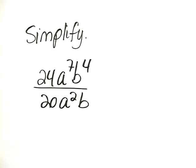Simplify 24a to the 7th, b to the 4th, all divided by 20a squared b.